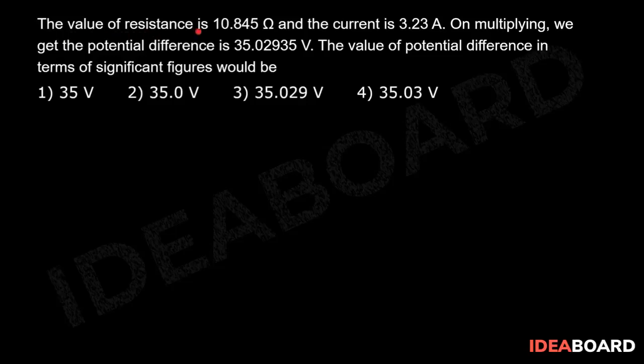The value of resistance is 10.845 ohms and the current is 3.23 amps. On multiplying, we get the potential difference is 35.02935 volts.